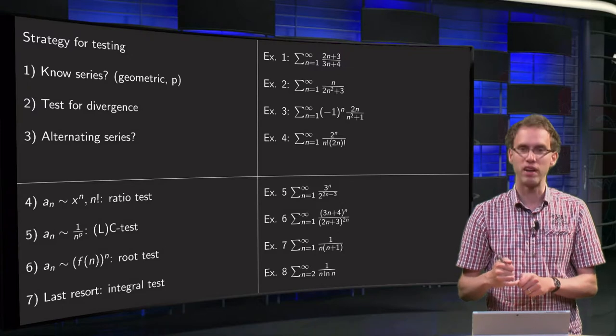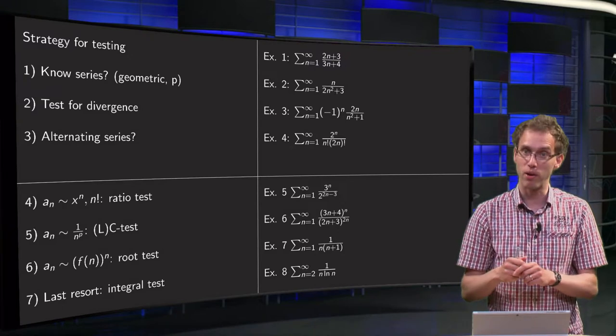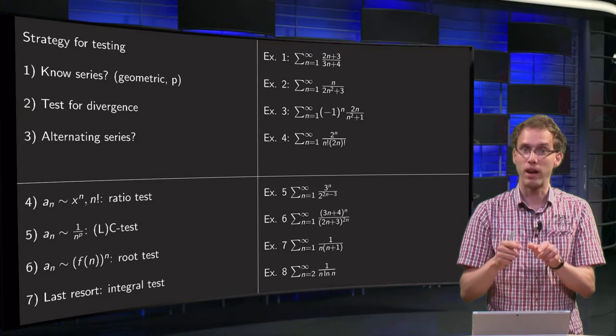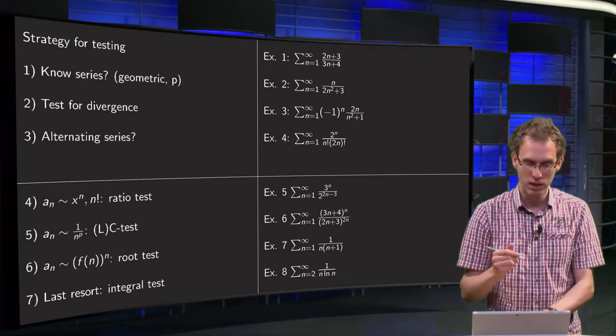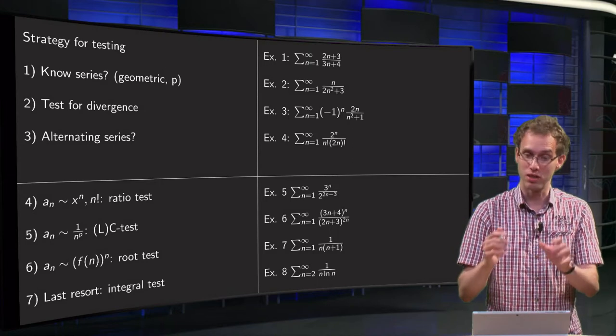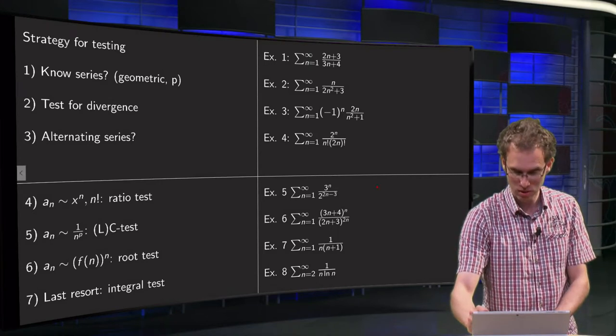5, what do we have over here? Hey, wait a minute, we have 3 to the power n divided by 4 to the power n times 1 over 8. This seems to be a geometric series. Well in disguise, but it is a geometric series, so we can just do 1.